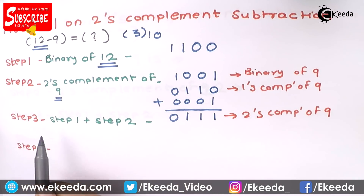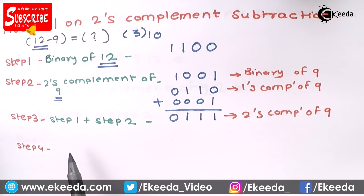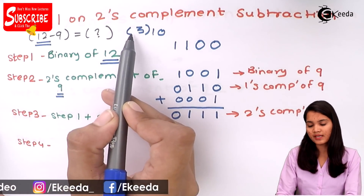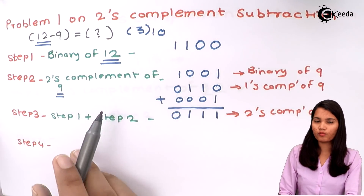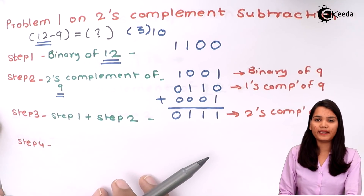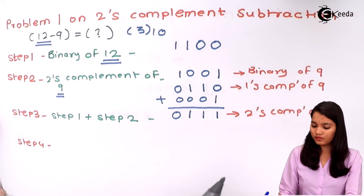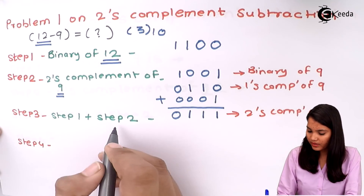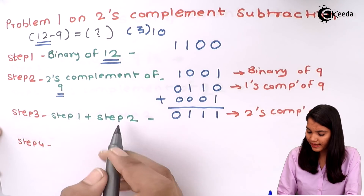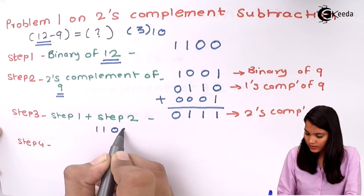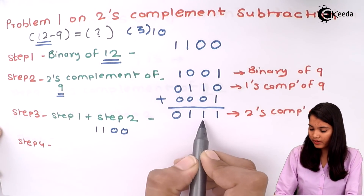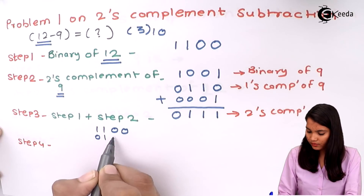Step number 3 is very important because from step 3 we will know whether our answer is positive or negative. Since 12 minus 9 is positive in decimal, the two's complement subtraction should also give us positive 3. We now add step 1 and step 2: the binary of 12 is 1 1 0 0, and the two's complement of 9 is 0 1 1 1.